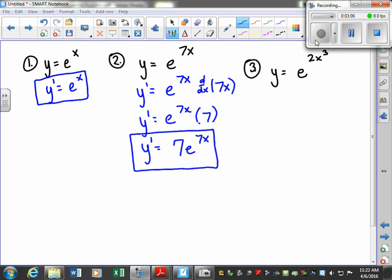Okay, our next one is y equals e raised to the 2x to the 3rd power. So our derivative is going to be e of that same times the derivative of 2x to the 3rd of our u value. So y prime is equal to e. We bring this down. Now what is the derivative of 2x to the 3rd?